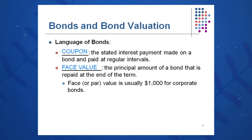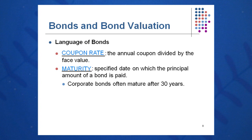Coupon is the interest payment — you clip off the coupon each and every period and cash it in. Face value is the $1,000 price of the bond that you paid, usually $1,000 for corporate bonds. The coupon rate is the coupon divided by face value. So for an 8% bond with an 8% coupon rate, you're going to get $80 each period.